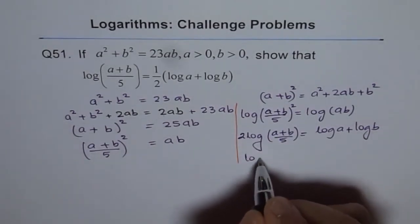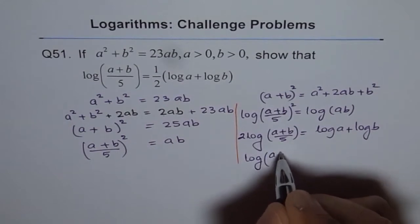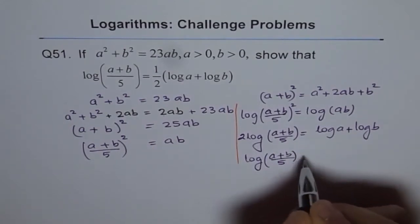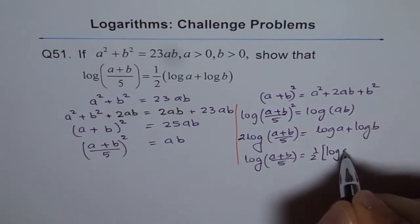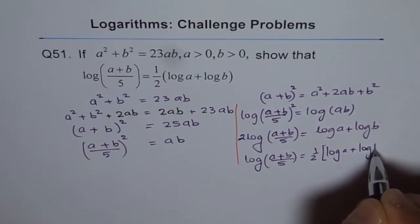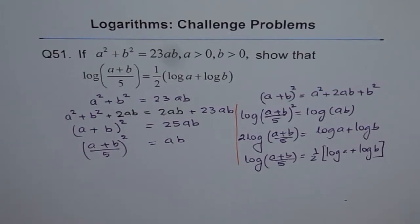From here, we get our result, which is log of a plus b over 5 equals half of log a plus log b. So that is how you prove this.